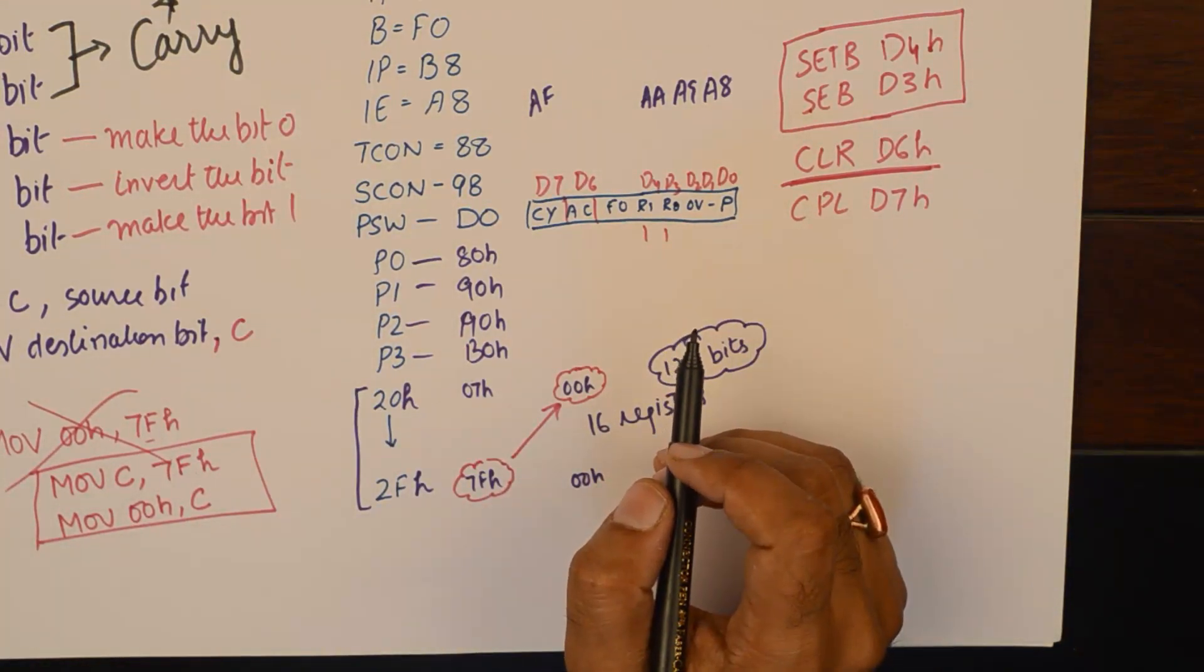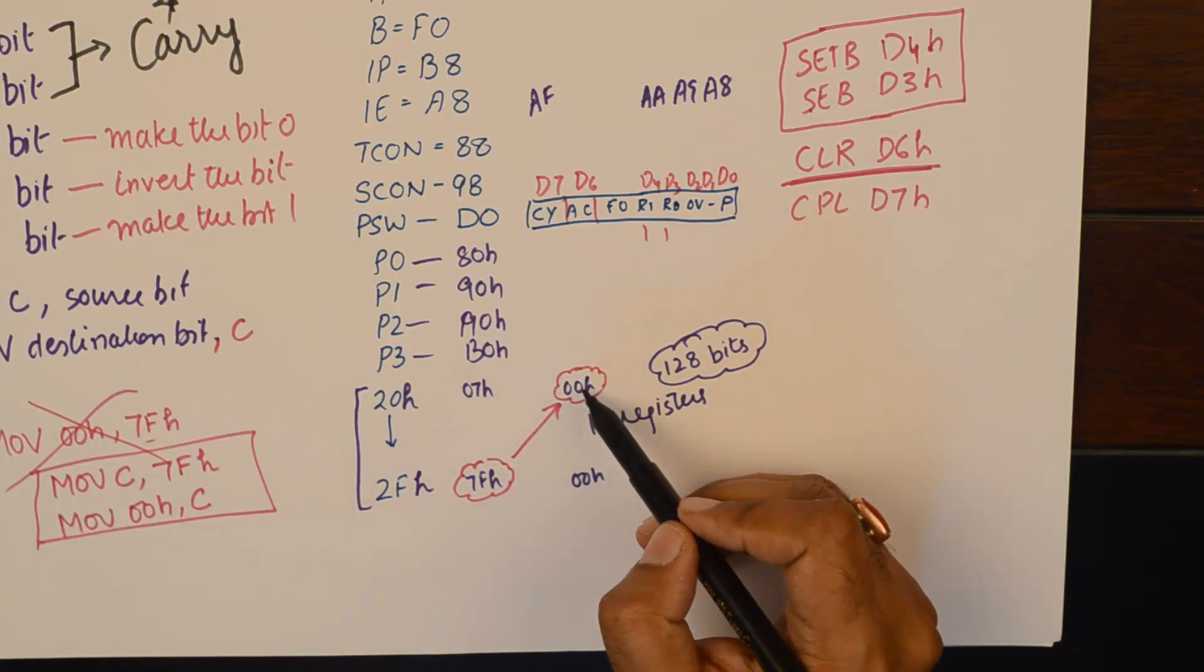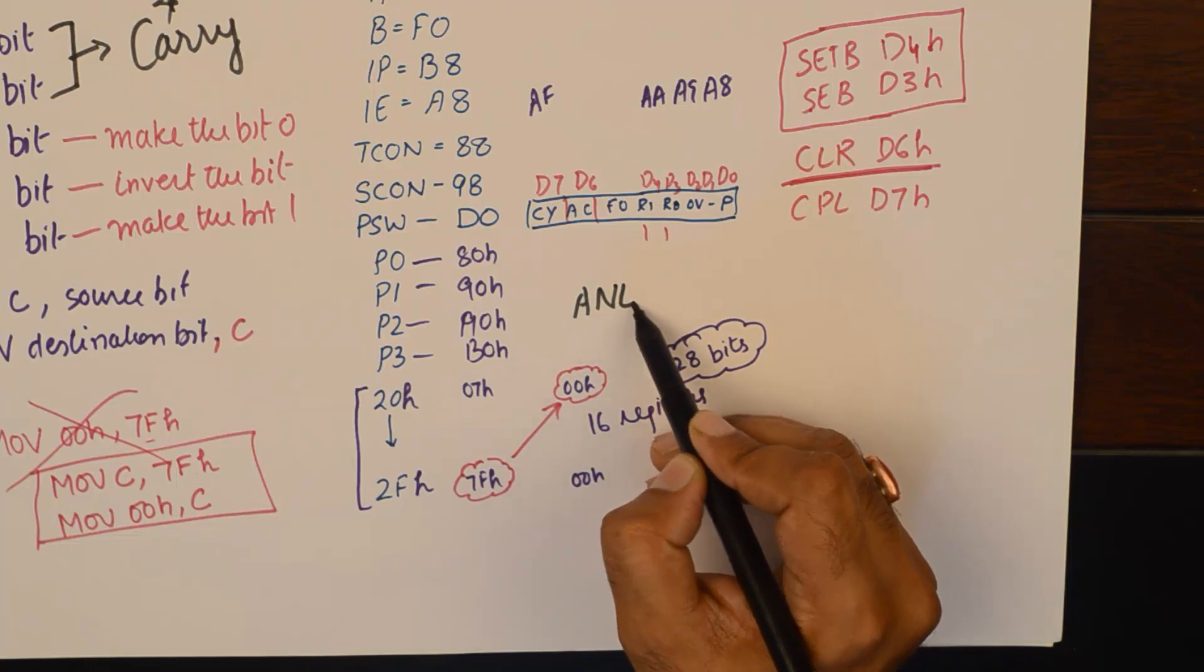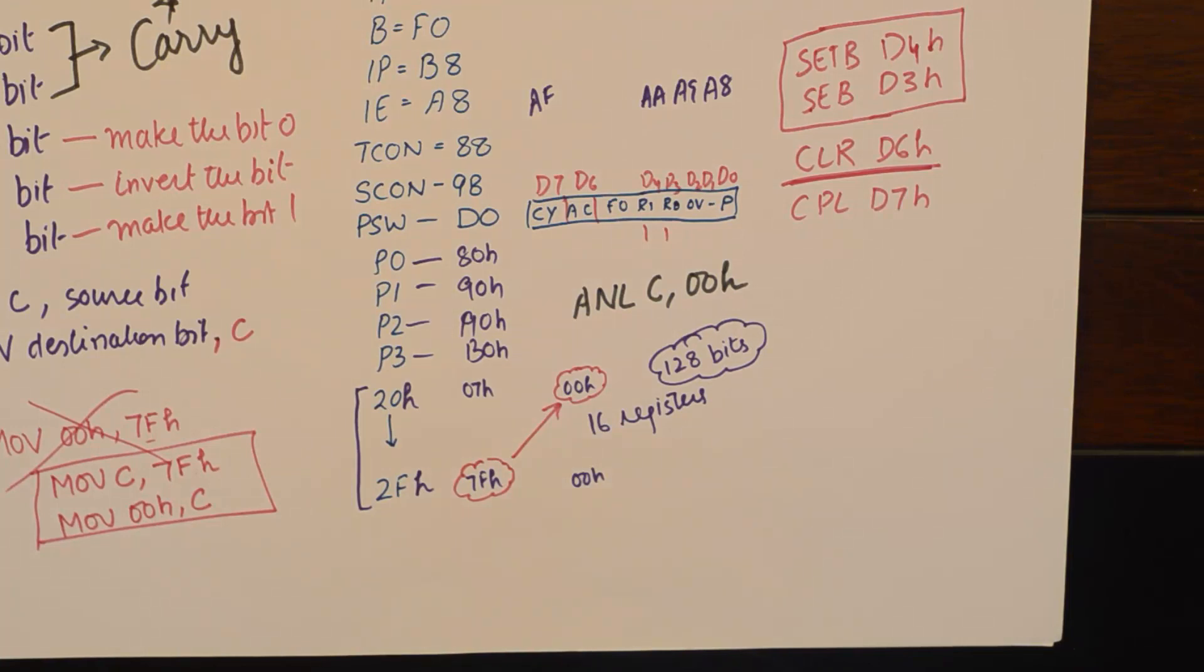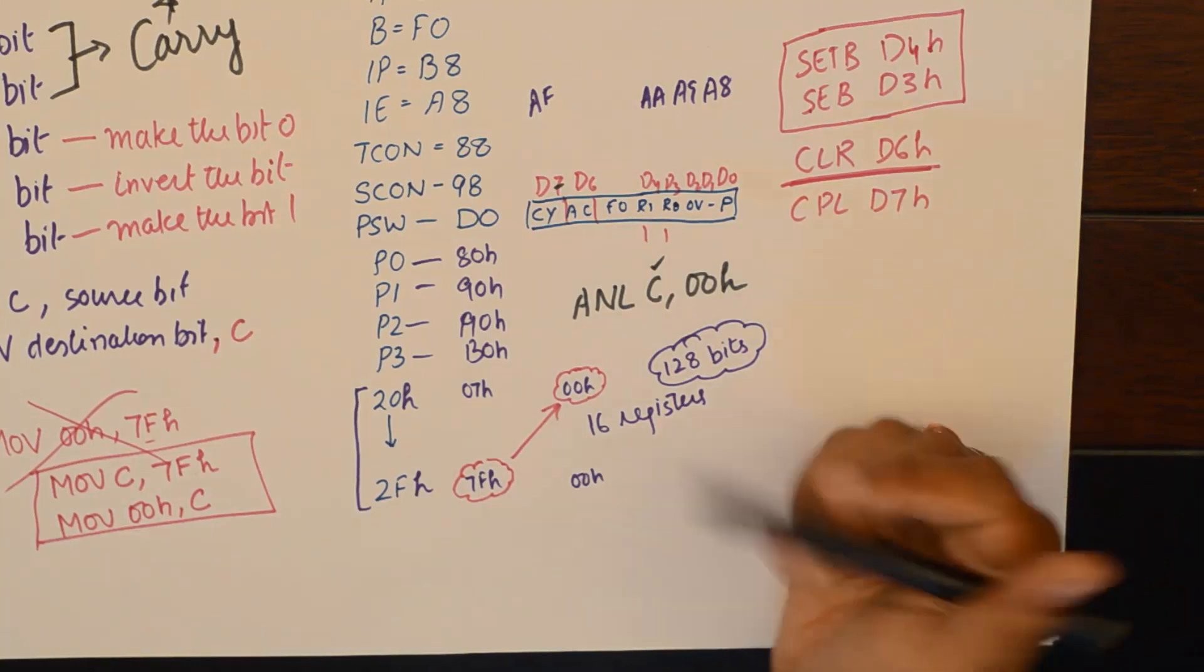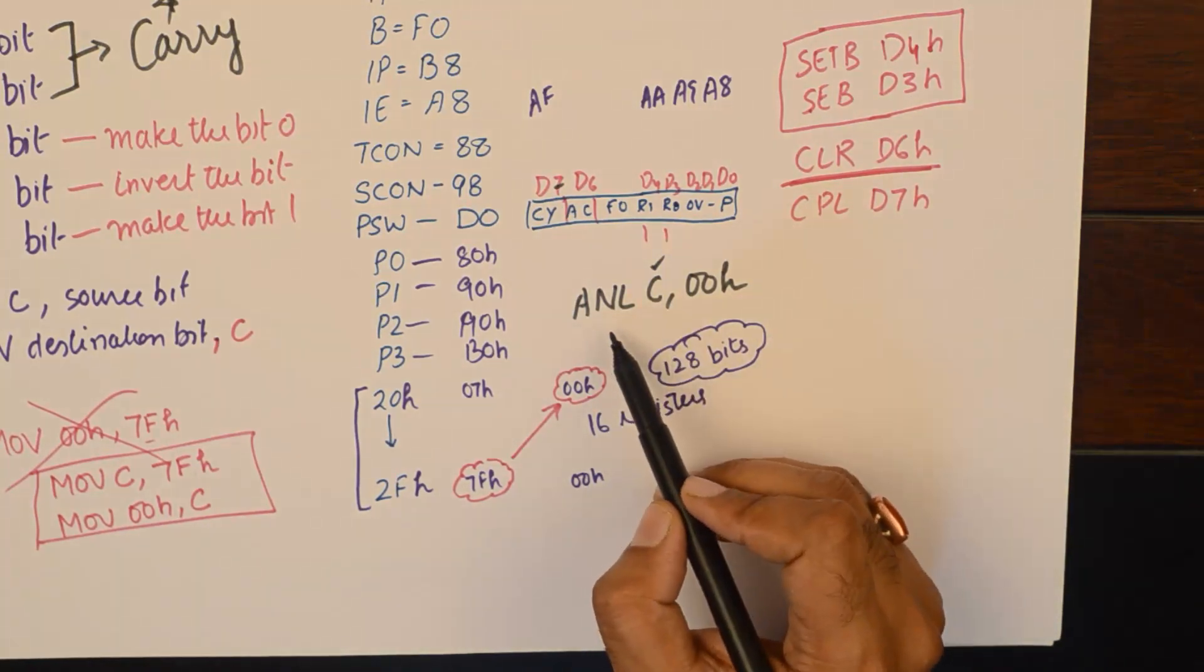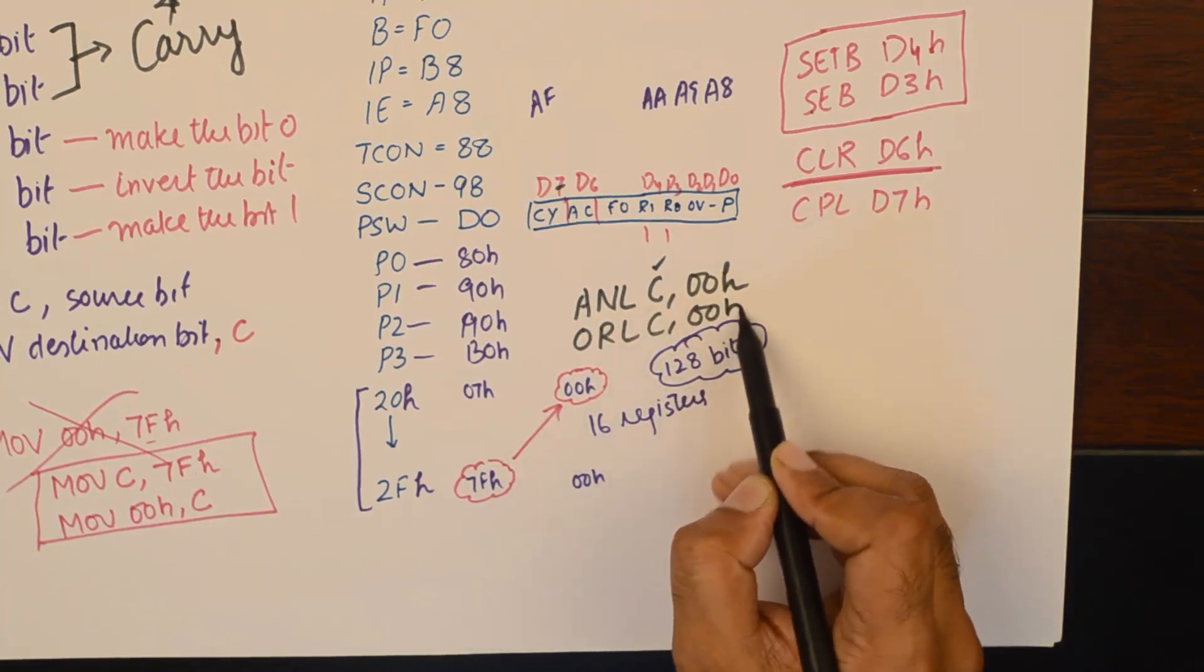I'll show you with an example here. For example, you want to logically AND the content of the 00H register with carry, then you would use this instruction ANL C,00H. Because anything and everything will happen with the C bit, which is of course the D7 address. Carry has an address of D7.